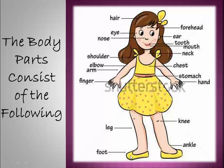Let's say it one more time, KG1. Hair, forehead, two eyes, two ears, a nose, a mouth, some teeth inside the mouth, neck, shoulder, elbow, arm, fingers.